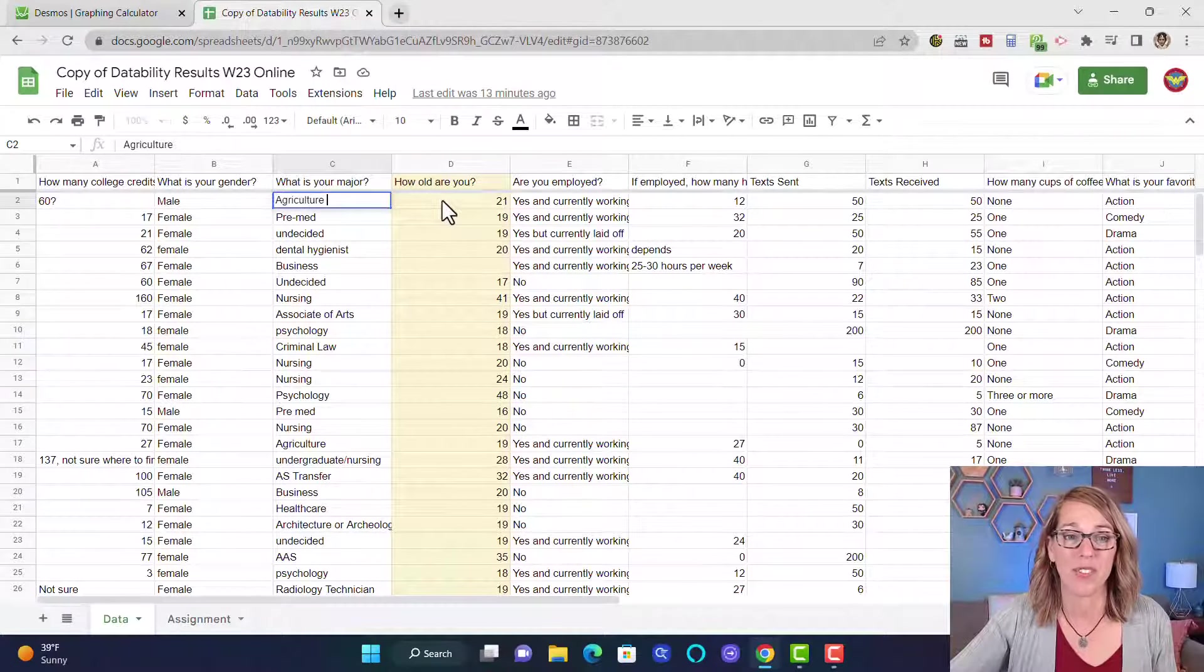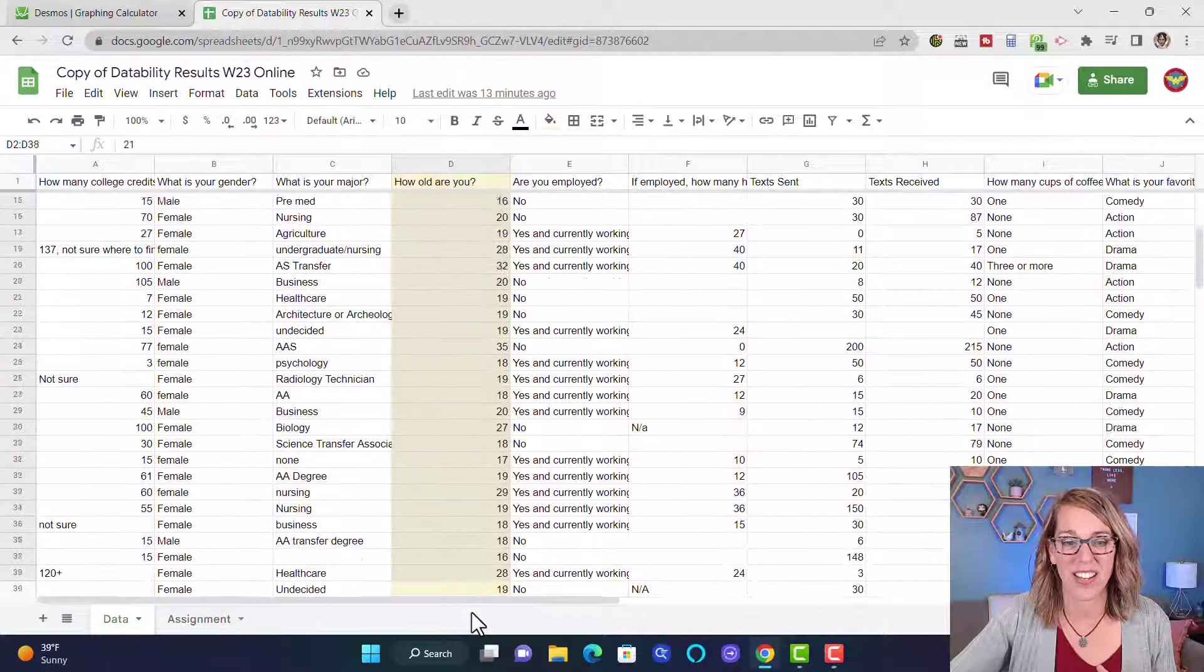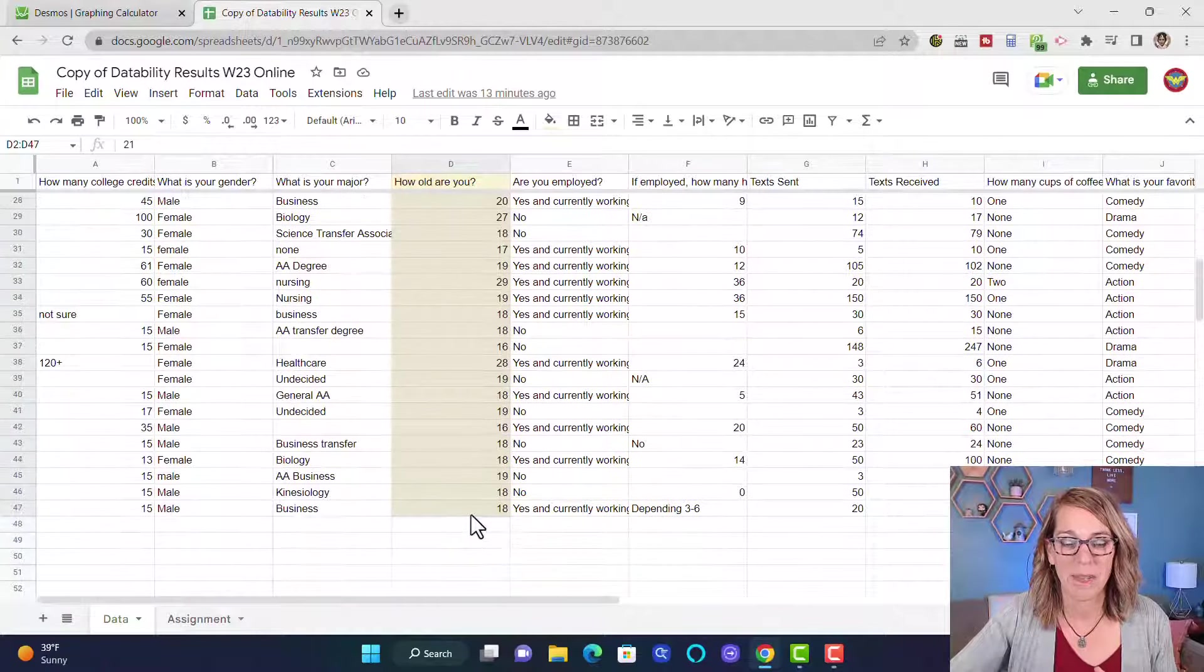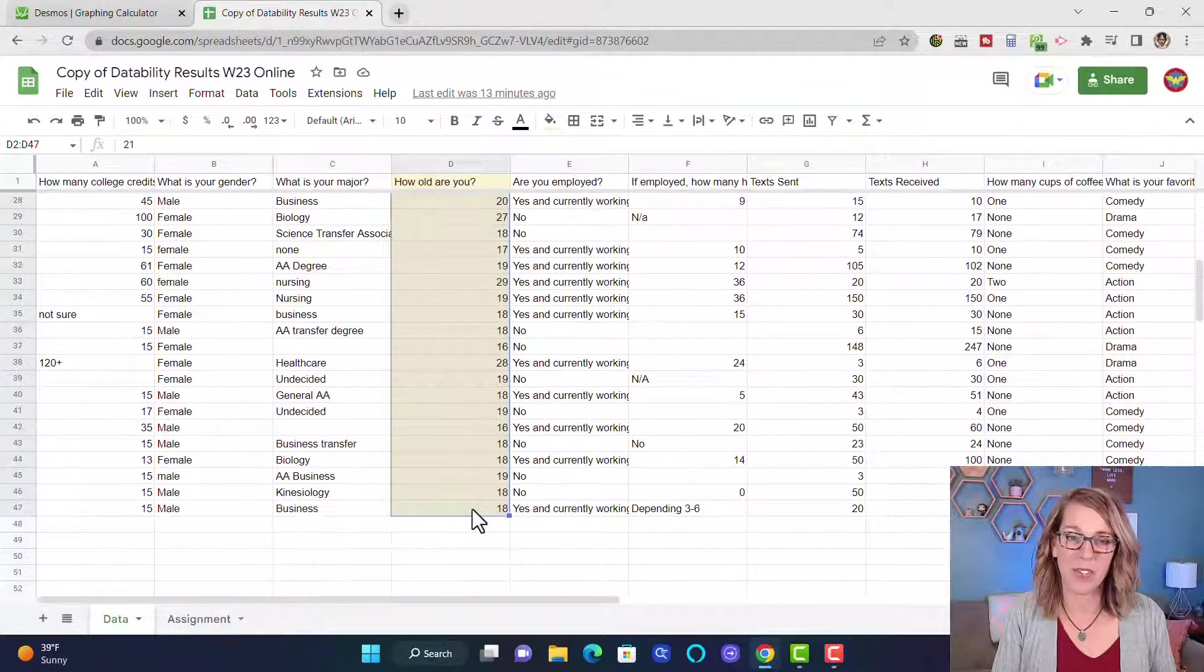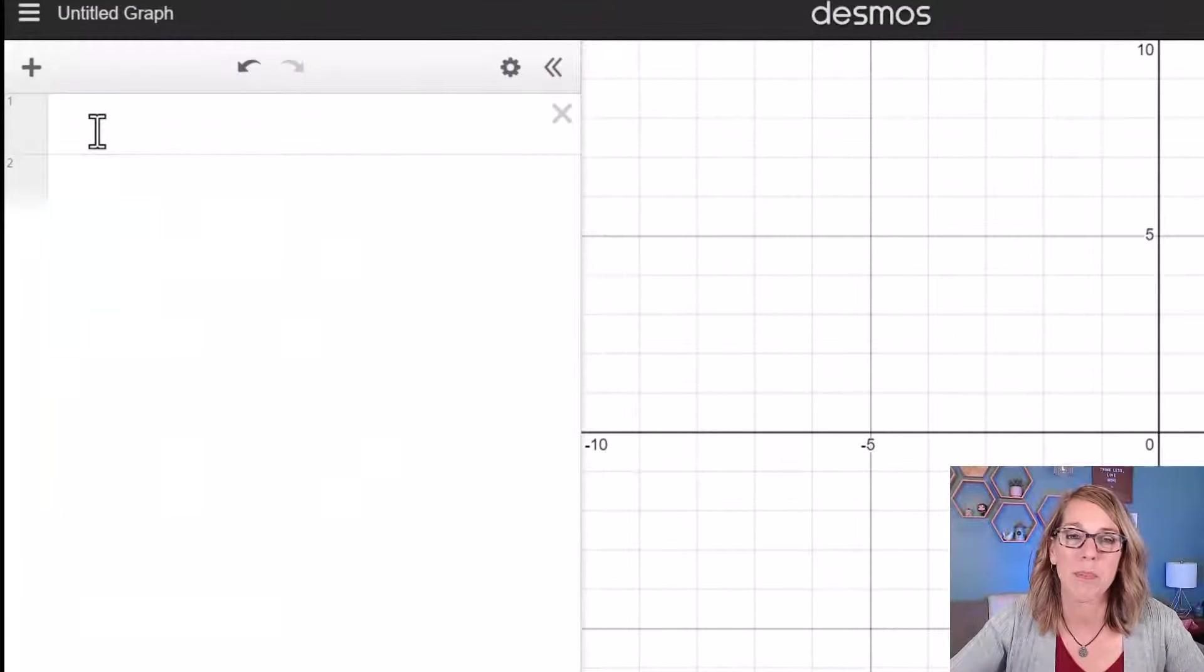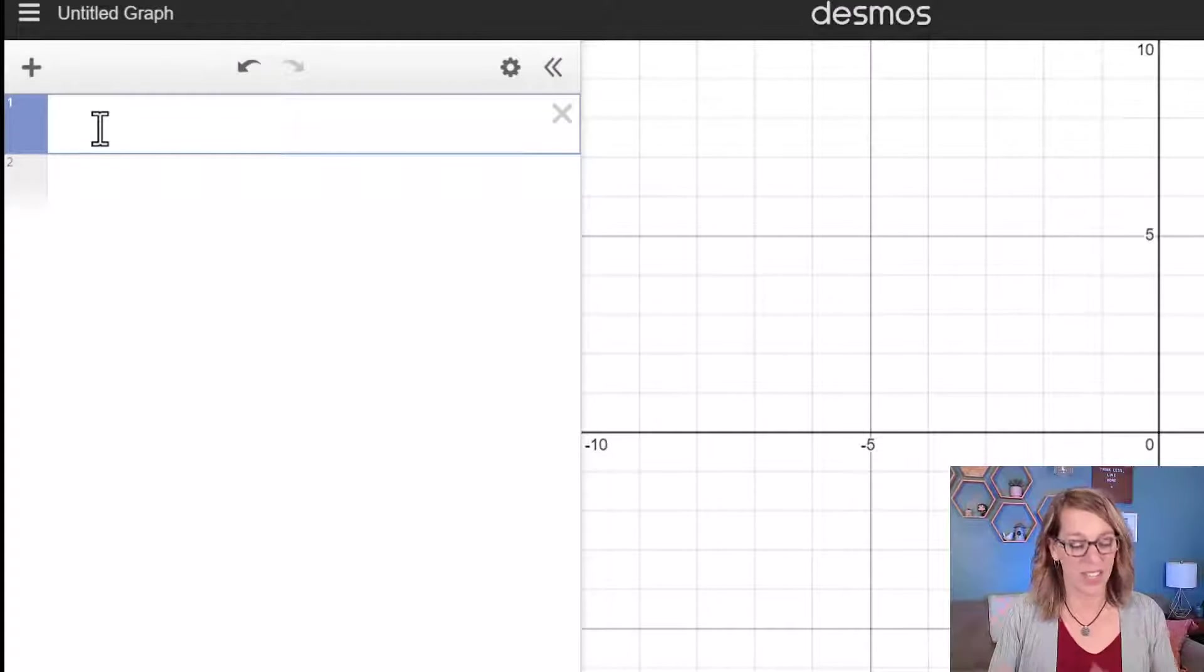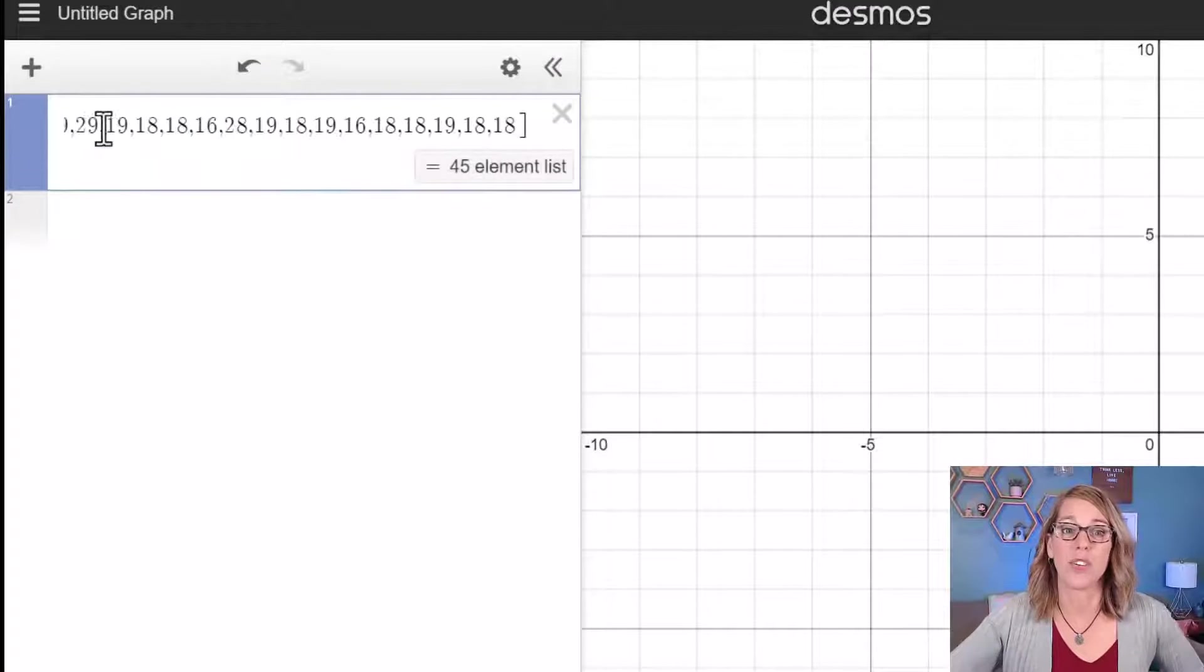I'm going to grab this age data from my students by clicking, holding, and dragging through the data, and I'm going to Ctrl+C to copy. You could also right-click to copy. Over to Desmos, I'm going to put my cursor in an empty cell and then Ctrl+V to paste, or you could right-click.